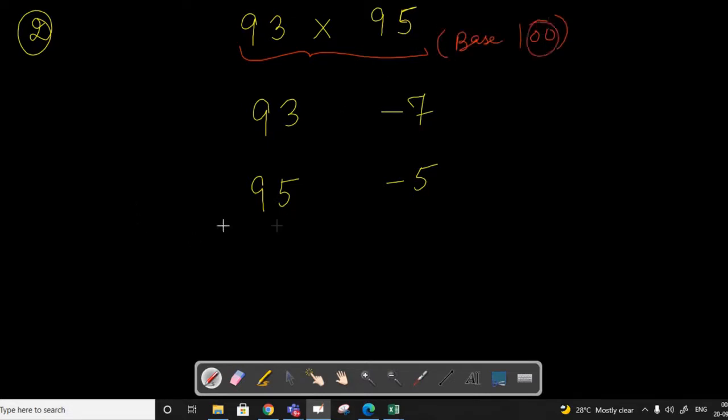Now let us consider the second example. Suppose we want to calculate 93 times 95. Both numbers are just below 100. We can see that 93 is 7 less than 100, and 95 is 5 less than 100. So both numbers have base 100.